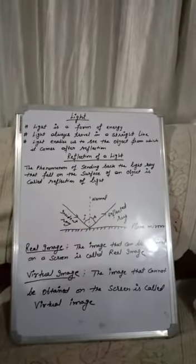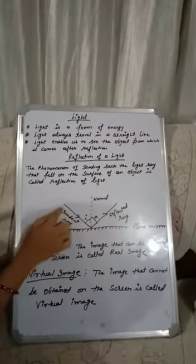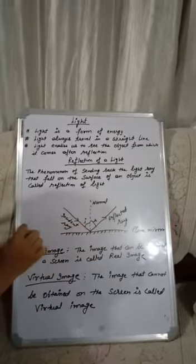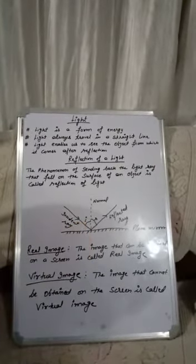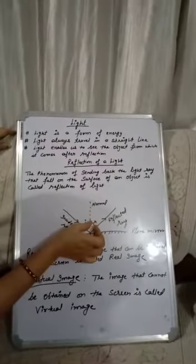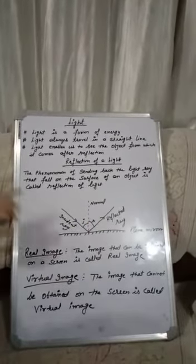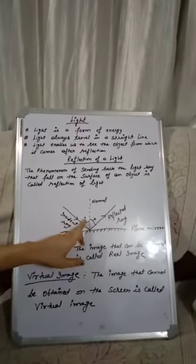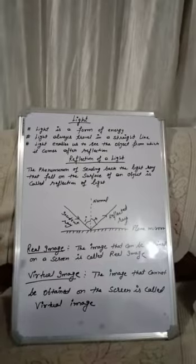The angle between the incident ray and the normal ray is called the angle of incidence, represented by 'i'. The angle between the reflected light and the normal is called the angle of reflection, represented by 'r'.